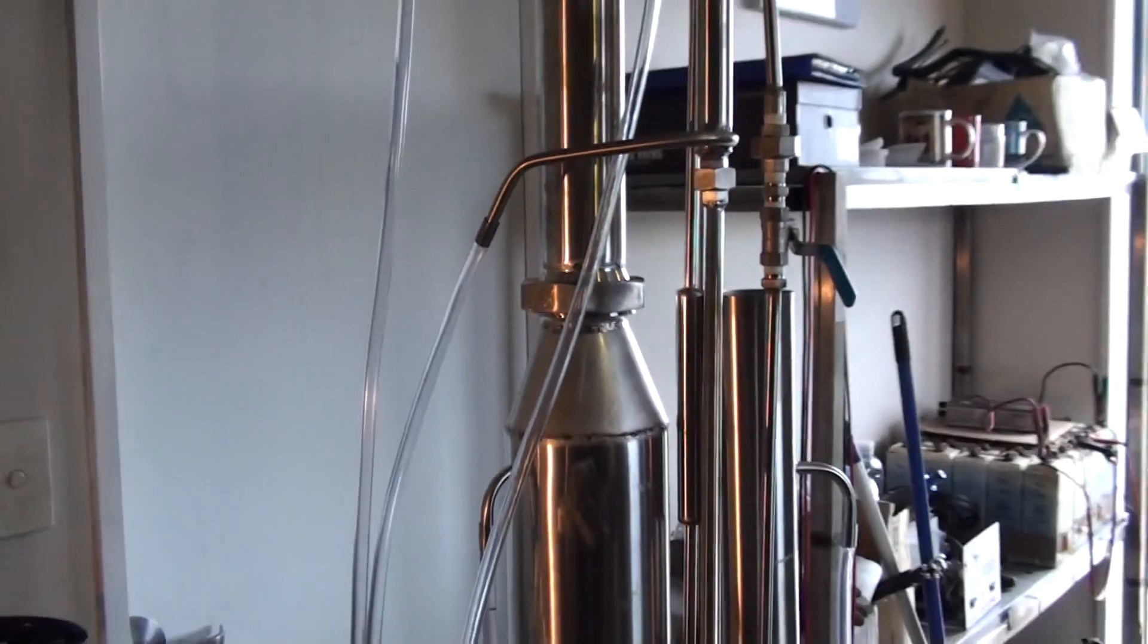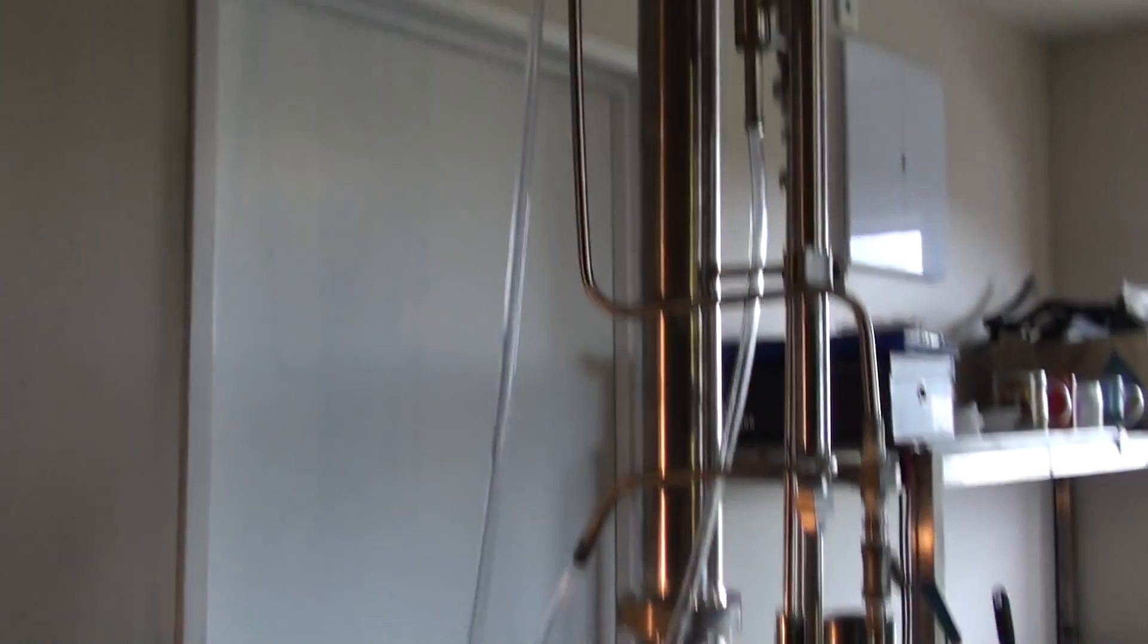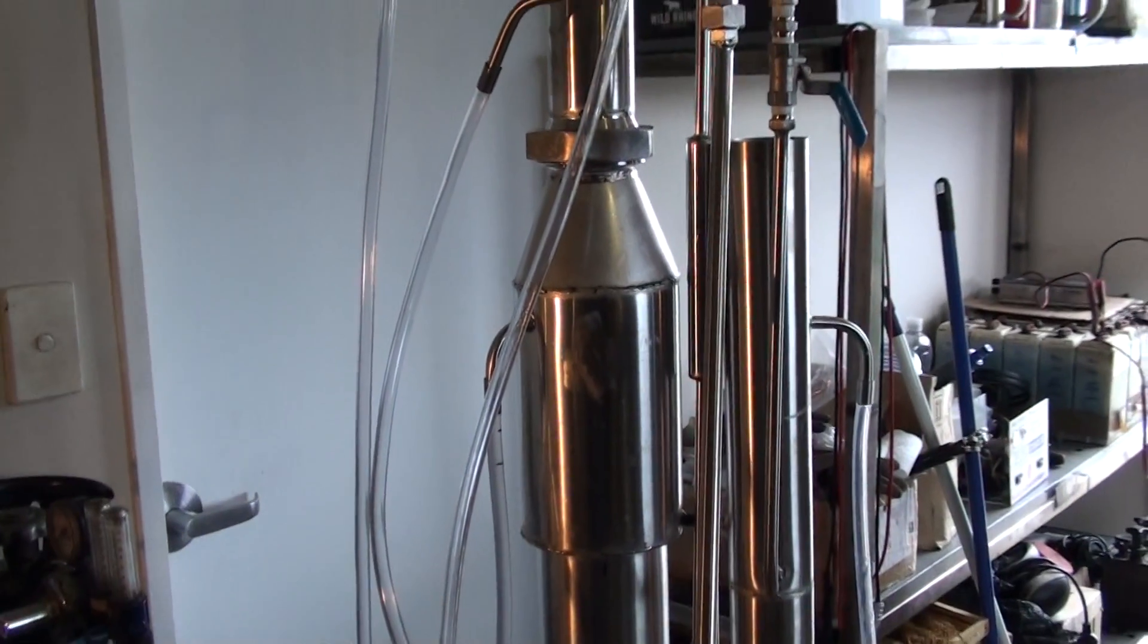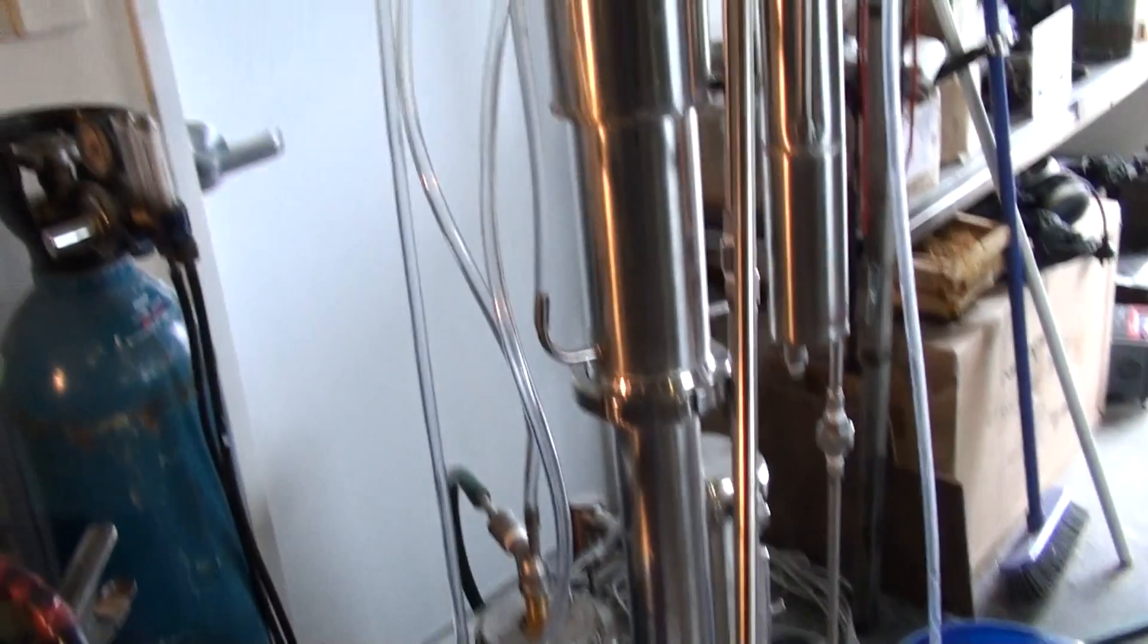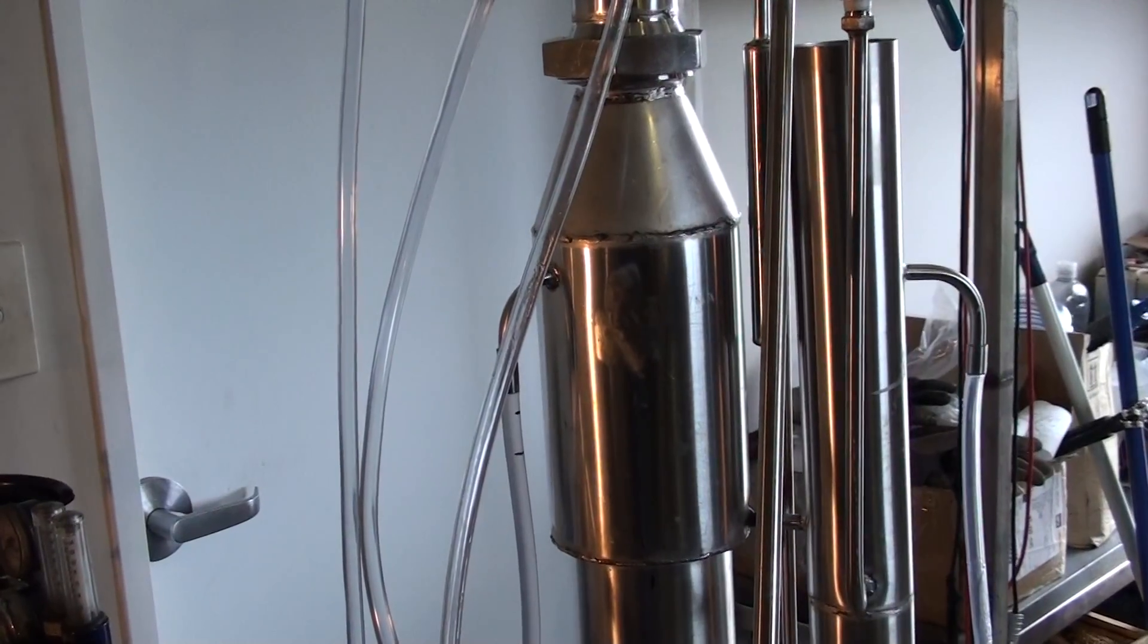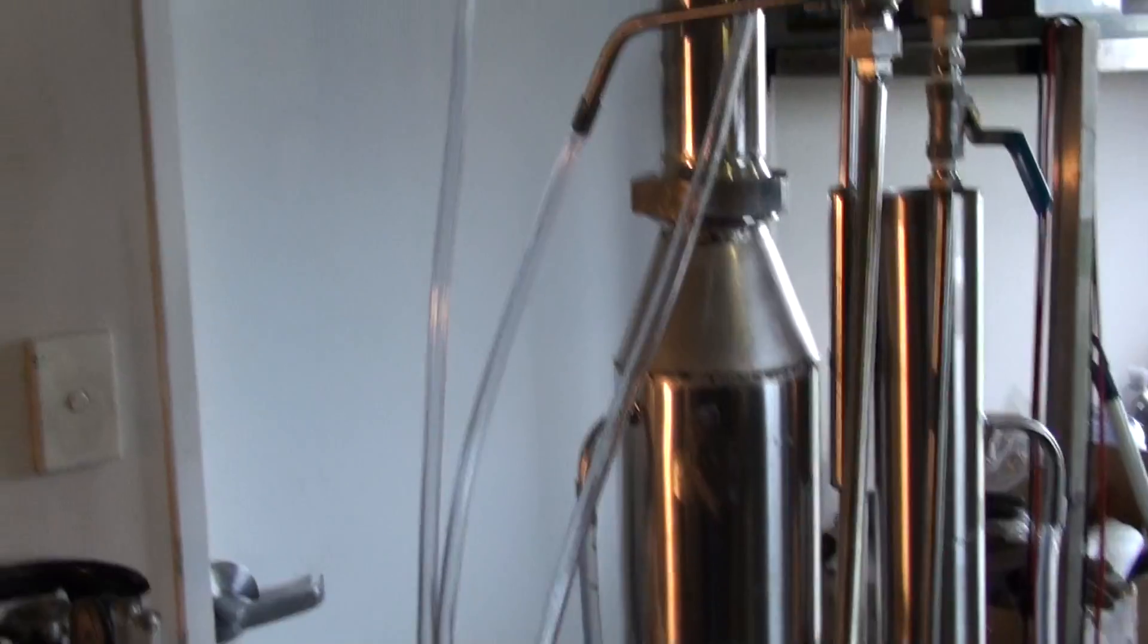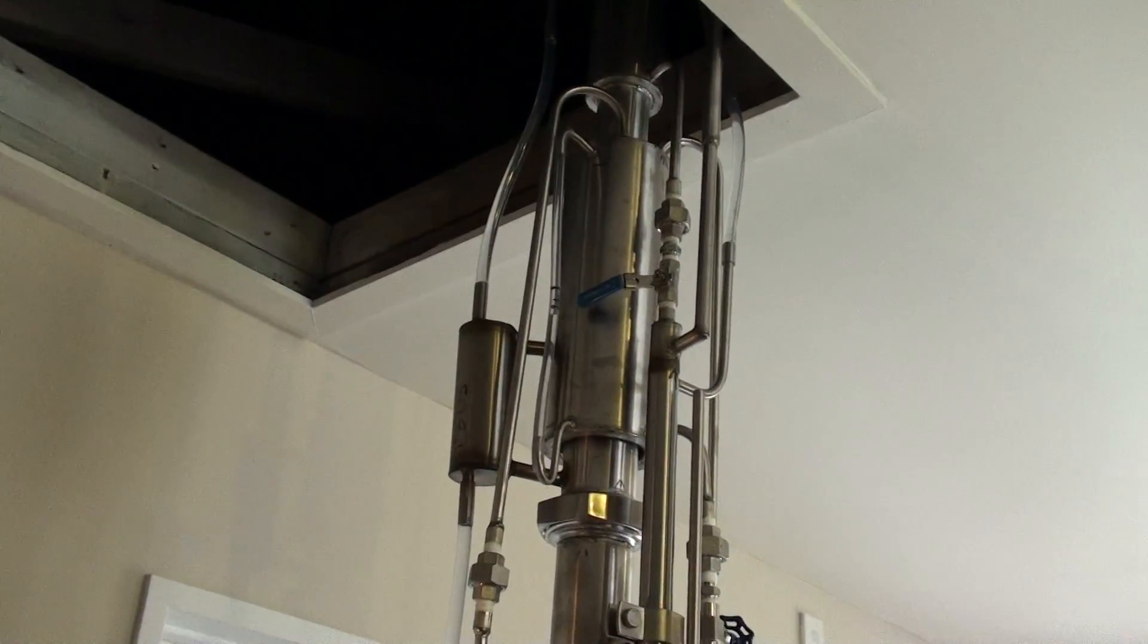From this portion up it's all fractional column, up to this portion. From the bottom it's all stripping column, so it strips and condenses all the stripped alcohol. In this portion there's a secondary boiler and then it reboils it up into the top portion of the column.